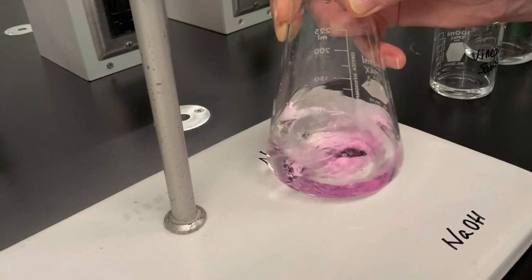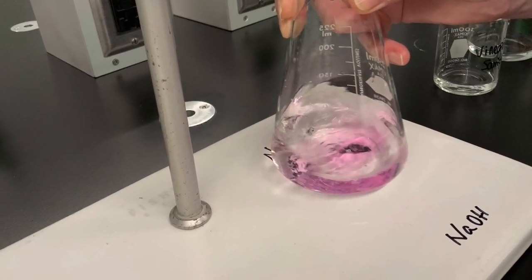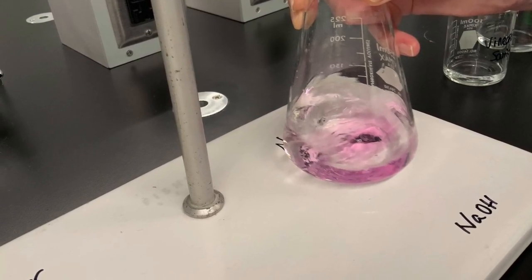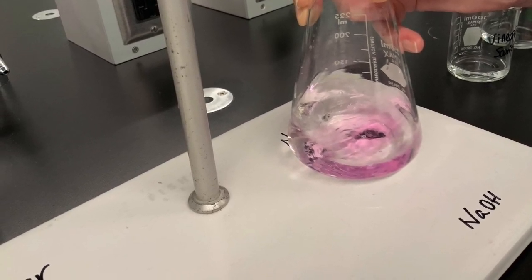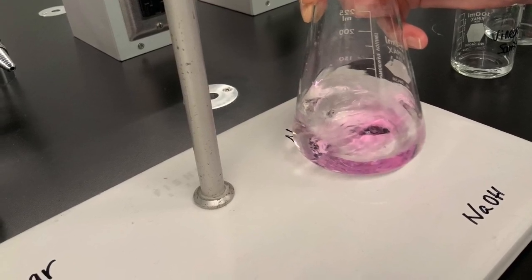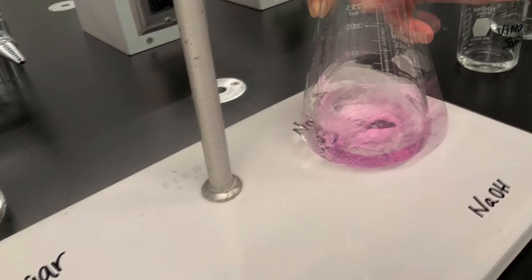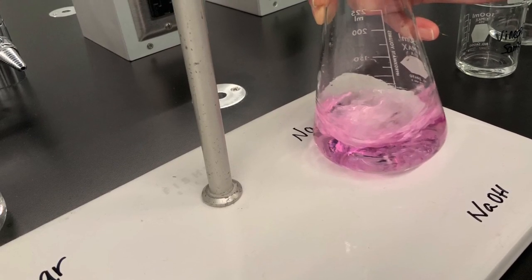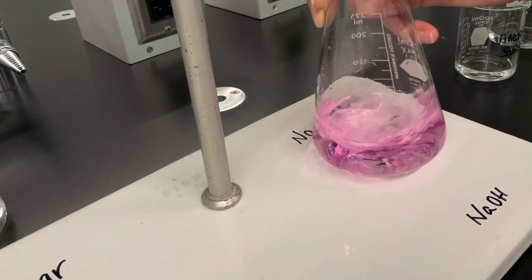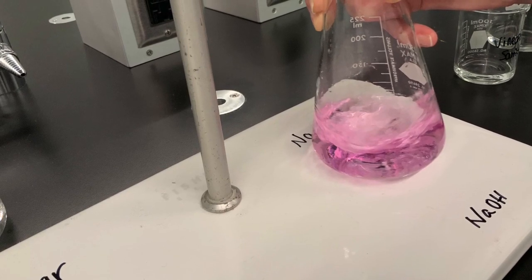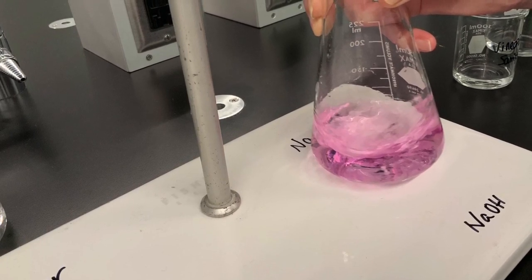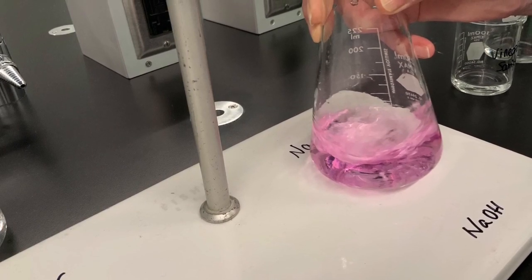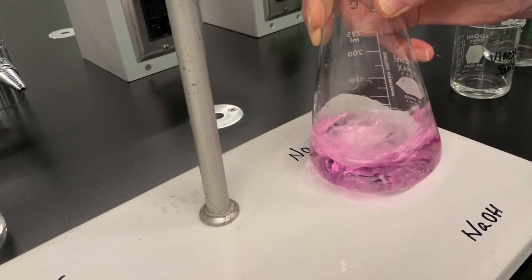For the last drops that are needed to turn the solution pink, you slow down the drop rate to maybe one drop every 5 seconds because you want to exactly determine which drop leads to the permanent pink coloration. Then you have a really exact measure of how much sodium hydroxide was needed to neutralize the acid, and then you can calculate the concentration of your acid based on the known concentration of your sodium hydroxide.